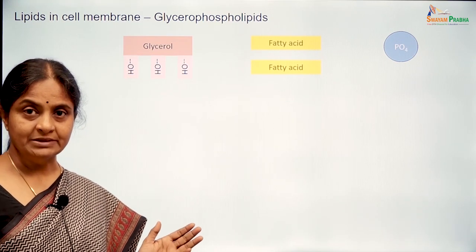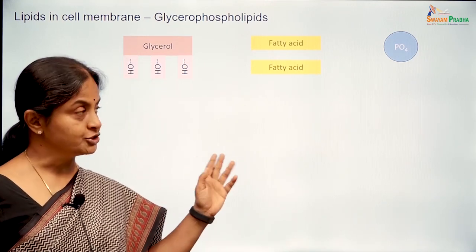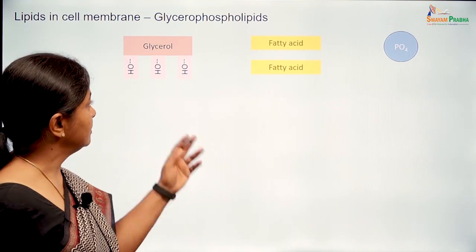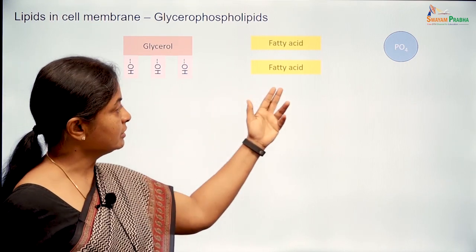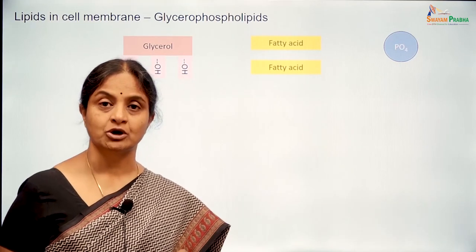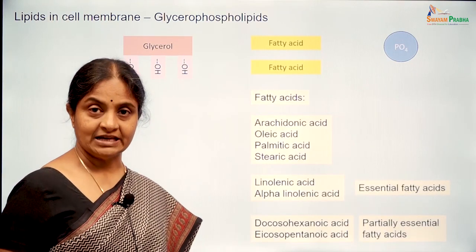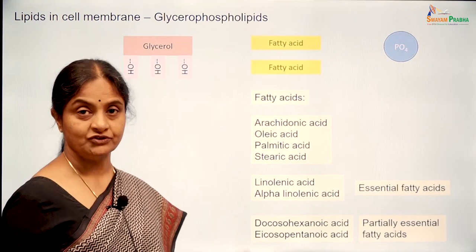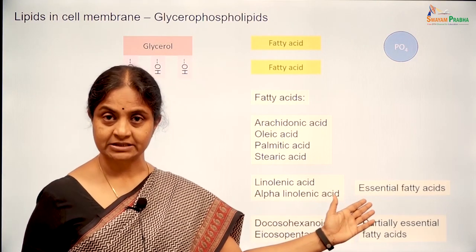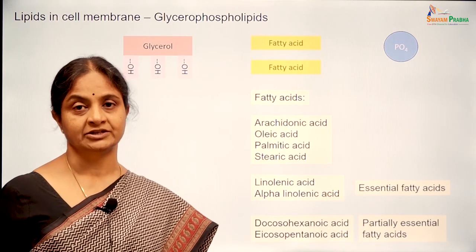The glycerophospholipids have four components making them up; three are shown here and we will come to the fourth a little later. The first three components are glycerol, two fatty acids, and a phosphate moiety, which combine to form what is called a phosphatidic acid molecule. This is a list of fatty acids and any of these can go into the two fatty acid slots. The essential fatty acids are those that the body cannot synthesize and we depend on our diet for those.